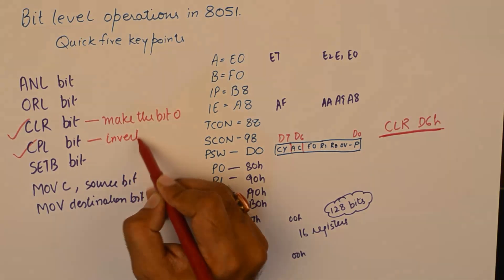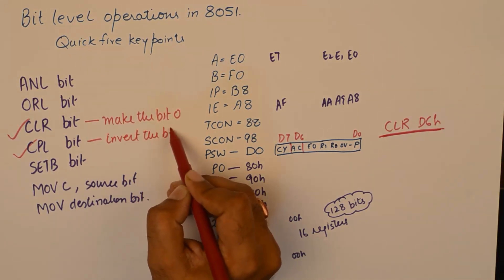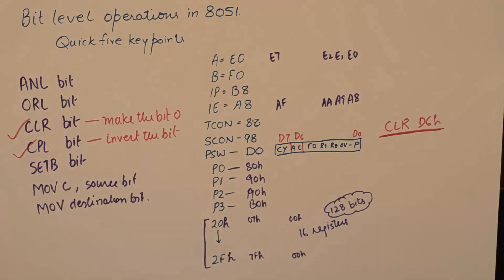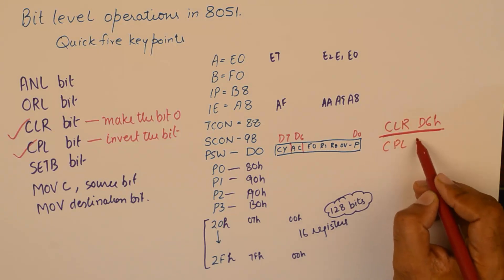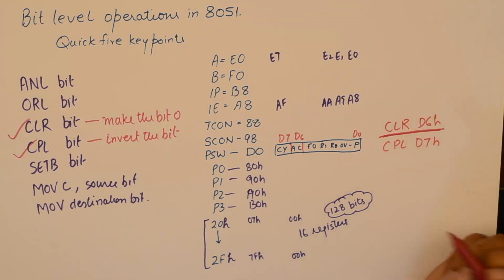Similarly, complement bit would invert the bit. If it is a 0 it will make it 1, if it is a 1 it will make it 0. And if I use CPL D7H, it will complement the carry.